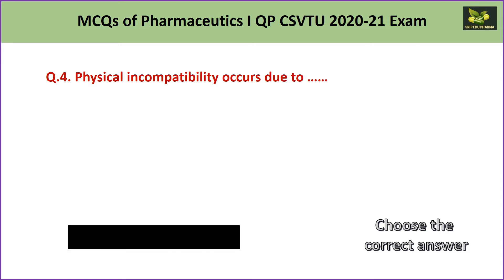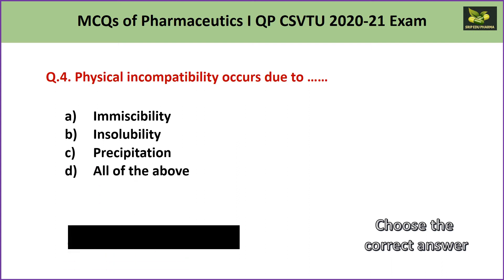Question number 4: Physical incompatibility occurs due to A. immiscibility, B. insolubility, C. precipitation, or D. all of the above. Physical incompatibility occurs when two or more substances combine and any physical change results in an unacceptable product. In all three cases — immiscibility, insolubility, and precipitation — physical changes are occurring. Hence the answer is D — all of the above.